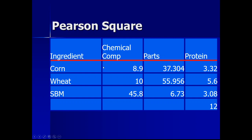For final verification, calculate protein from each ingredient: corn (8.9% × 37.3 parts) = 3.32%, wheat (10% × 55.9 parts) = 5.59%, soybean meal (45.8% × 6.73 parts) = 3.08%. Summing these gives approximately 12%, confirming our required protein level. So by mixing 37.3 parts corn, 55.9 parts wheat, and 6.73 parts soybean meal, we get a ration containing 12% protein. This concludes the Pearson square method calculations.